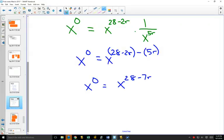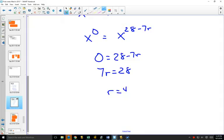Right now you might be able to say, oh, I know what the answer is. But if you wanted to solve it all the way algebraically, can you see that now that your bases are the same, 0 has to equal 28 minus 7r? You can move the 7r to the other side, divide by 7, and we find out that r is equal to 4.